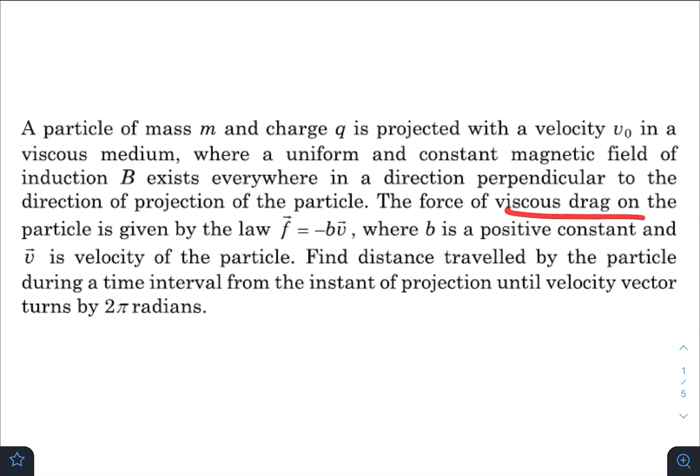The force of viscous drag on the particle is given by the law f = -bv, where b is a positive constant and v is velocity of the particle. Find distance travelled by the particle during a time interval from the instant of projection until velocity vector turns by 2π radians.